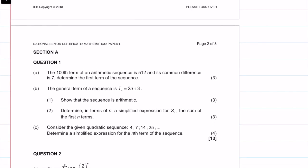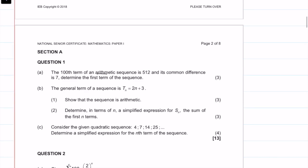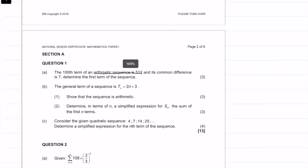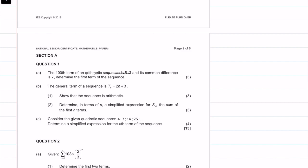So the hundredth term of an arithmetic sequence is 512 and its common difference is 7. Determine the first term of the sequence. Not too difficult. So we know the hundredth term. So question one A, T100 is equal to 512.